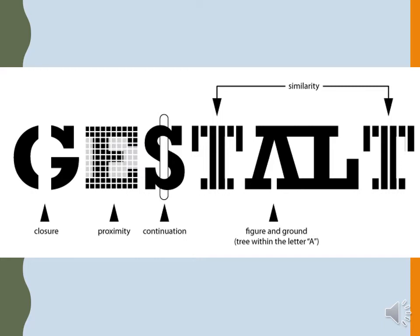Here are examples of all of those grouping principles. First, you see closure — what letter is that? It's definitely the letter G. You close off that figure, connect the lines, and fill it in. Proximity — all the gray squares are together and all the black squares are together, and you see the letter E. Continuity — is that three segments of a white line, or one continuous white line that goes behind parts of the S? It's more realistic to see it as a white line going in and out of the S. Similarity — if you looked at all these letters and asked which ones to group together, the two T's should go together because they're most alike. And with figure-ground, within the letter A, you might see a tree or an arrow.